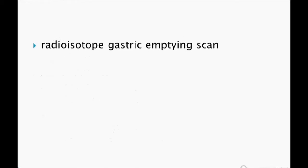The investigation of choice is a radionuclide gastric emptying scan. We mix a radioactive material with food, ask the patient to eat it, and then take pictures at timed intervals. This tells us whether there is a normal or abnormal delay in the emptying of food from the stomach into the intestine.